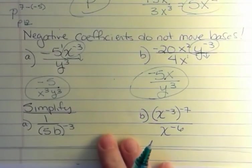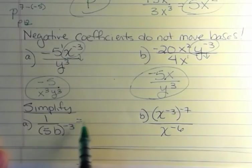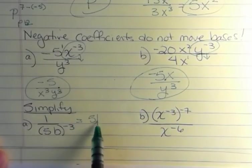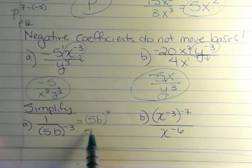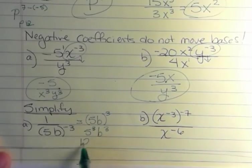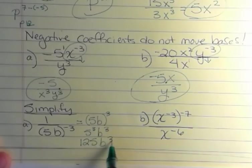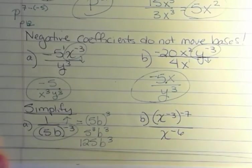And the last two problems I want to show you, this is just similar to the one we did earlier. I can bring this whole thing up because this is to a negative 3. I can bring this up to be 5b to the third power. And I could simplify that to be 5 to the third and b to the third. And if they wanted it to multiply that out, that's 125b to the third. But because this was in the denominator, it goes up to the top.